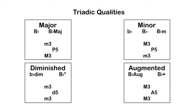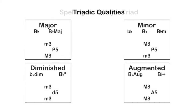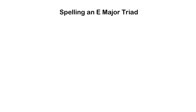Before we move on to talk about chordal inversion, let's talk about spelling each of these triads. If you're asked to spell a triad, you will usually be given, at a minimum, the triad's root and quality. We're going to start by determining what pitches go into the triad. For example, if you need to spell an E major triad, begin by finding the root pitch — the letter name with any attached accidental that goes into the triad's name. In this case, we need an E.